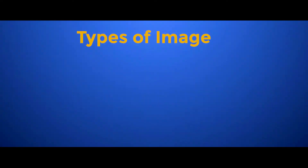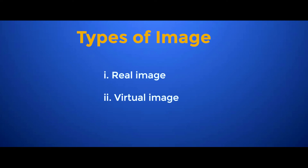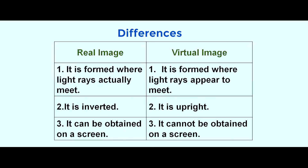Let's look at the types of images. We have two types of images: real image and virtual image. Real image is formed by the actual intersection of the reflected rays, or we can say it is formed where the rays actually meet. Whereas virtual image is formed where the reflected rays appear to meet — they only appear to meet.